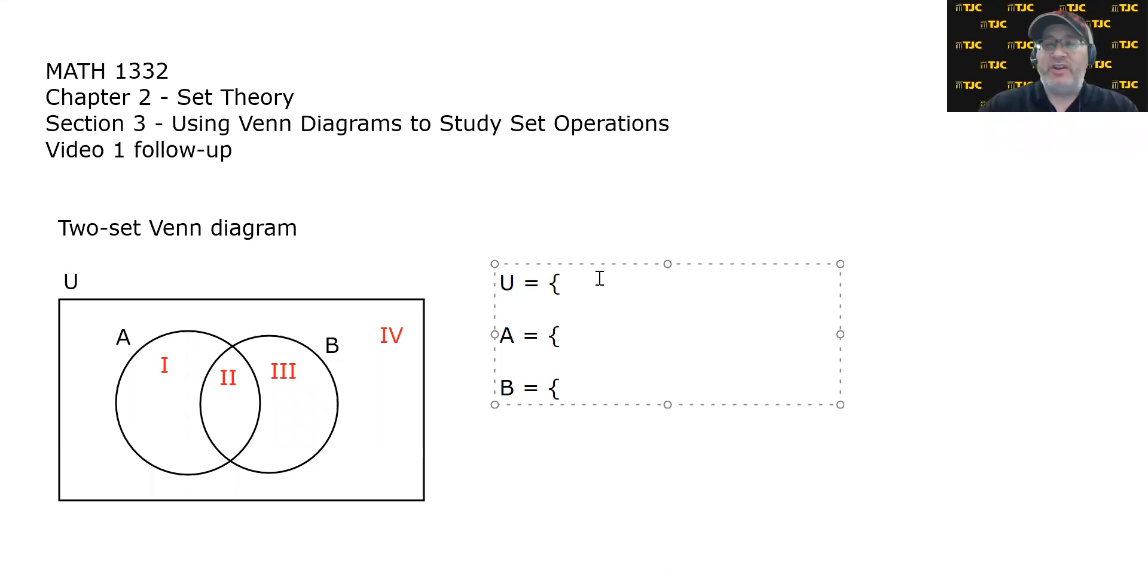For example, you see on the screen here a two-circle Venn diagram with sets A and B and the four regions, as we're going to label standardly in the future, regions 1, 2, 3, and 4. The universe, of course, is comprised of all four regions. So we could say the universe is the set containing region 1, 2, 3, and region 4.